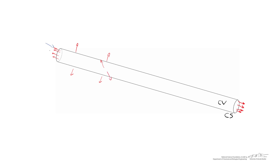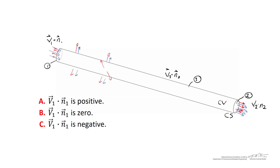It's also important to consider the velocity vectors at all locations. Here at the entrance, the velocity vectors are entering the control surface. On the right, the velocity vectors are leaving the control surface. And the velocity vectors are also leaving the third surface of the cylinder as permeate. Let's break up the control surface into three individual surfaces: surface 1 at the entrance, surface 2 at the exit, and surface 3 for the permeate. We're going to evaluate v1 dot n1 at the entrance, v2 dot n2 at the exit, and v3 dot n3 for the permeate. The first question: what is the sign of the dot product v1 dot n1 evaluated at surface 1 — is it positive, zero, or negative?